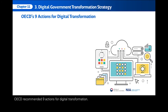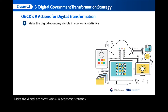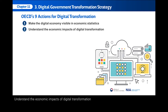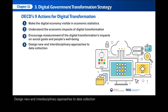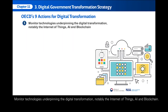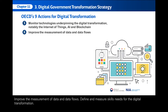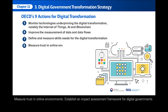The OECD recommended nine actions for digital transformation: make the digital economy visible in economic statistics; understand the economic impacts of digital transformation; encourage measurement of digital transformation's impacts on social goals and people's well-being; design new and interdisciplinary approaches to data collection; monitor technologies underpinning digital transformation, notably the Internet of Things, AI, and blockchain; improve measurement of data and data flows; define and measure skills needed for digital transformation; measure trust in online environments; and establish an impact assessment framework for digital governments.